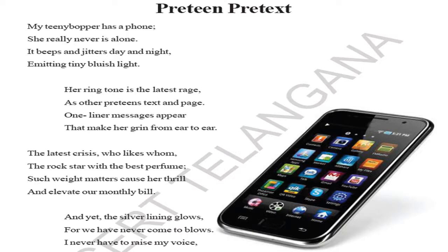The poem 'Preteen Pretext' is related to mobile phones. Everyone has mobile phones nowadays — it's very, very necessary. Even I have seen basic small models, but everyone has a smartphone. It's part of our life, part of our body, it has become. Let's start the poem. 'My teeny bopper has a phone' — 'teeny bopper' means a small boy or girl.